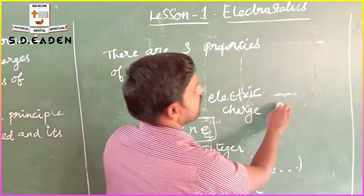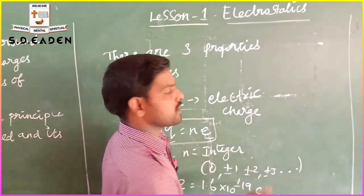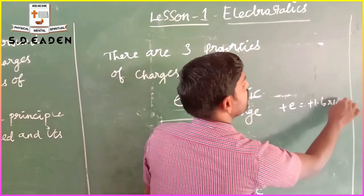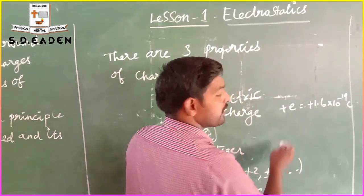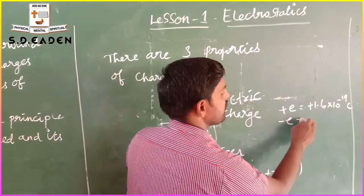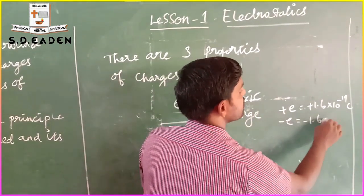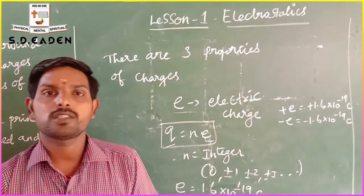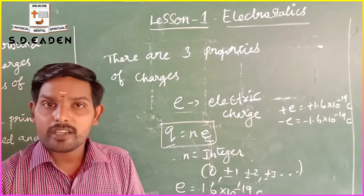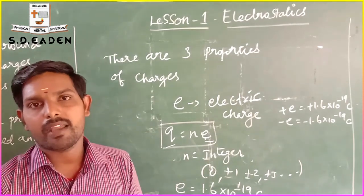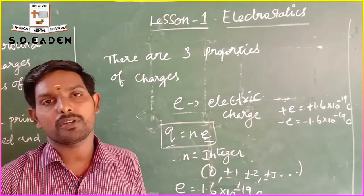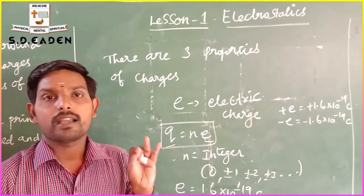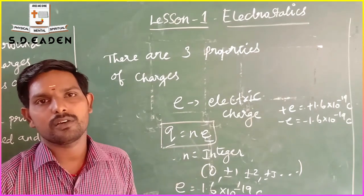For a proton, which is a positive charge: +E = +1.6 × 10⁻¹⁹ coulomb. For an electron, which is a negative charge: −E = −1.6 × 10⁻¹⁹ coulomb. Quantization of charge is applicable only at the microscopic level, not at the macroscopic level. These are the three properties of electric charges: first is electric charge, second is conservation of charge, and third is quantization of charge.